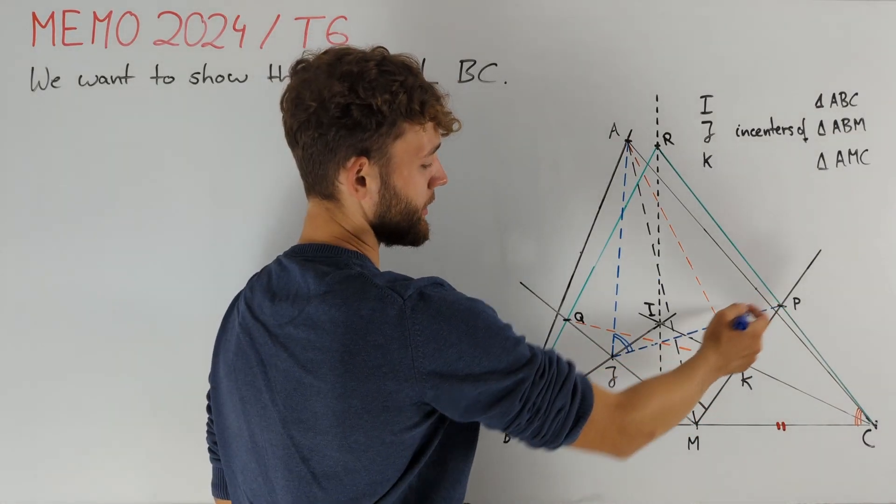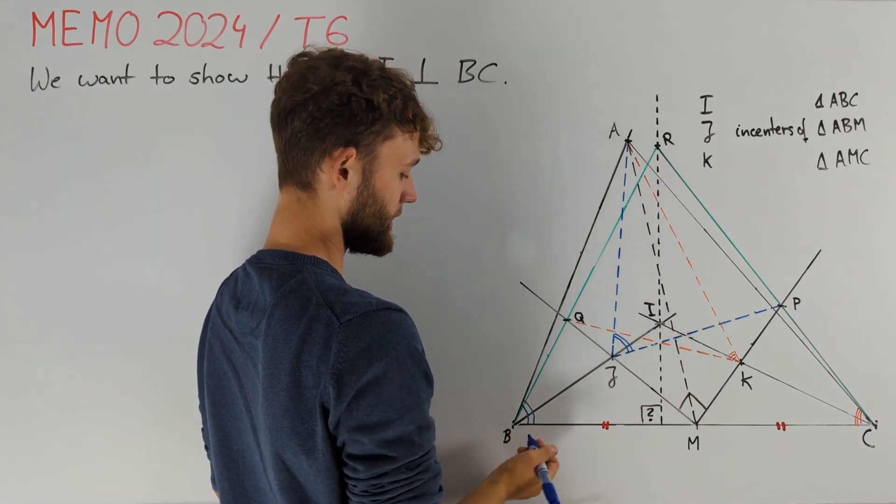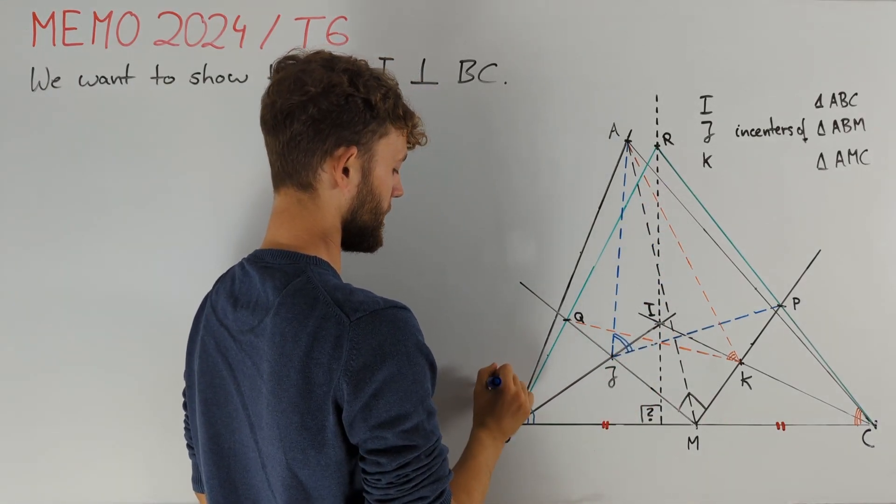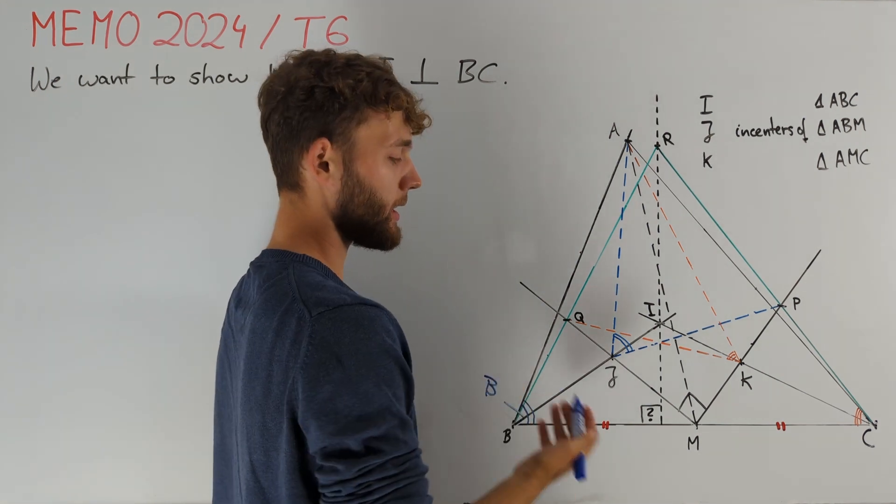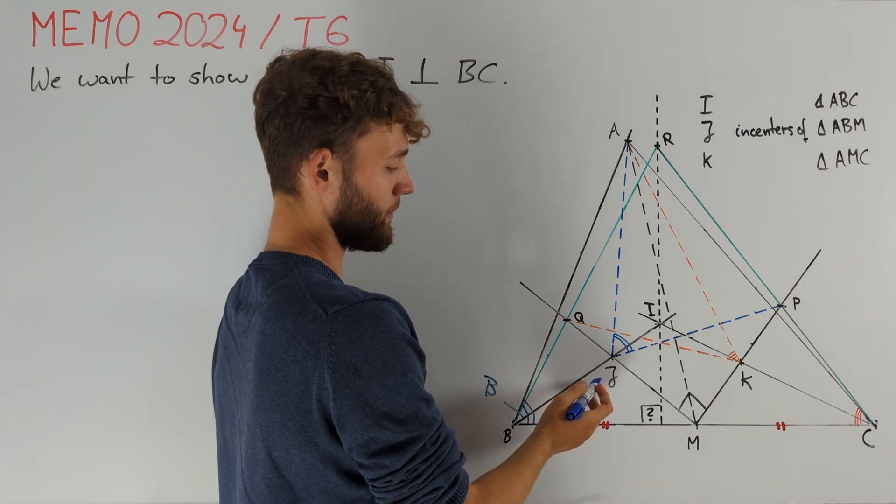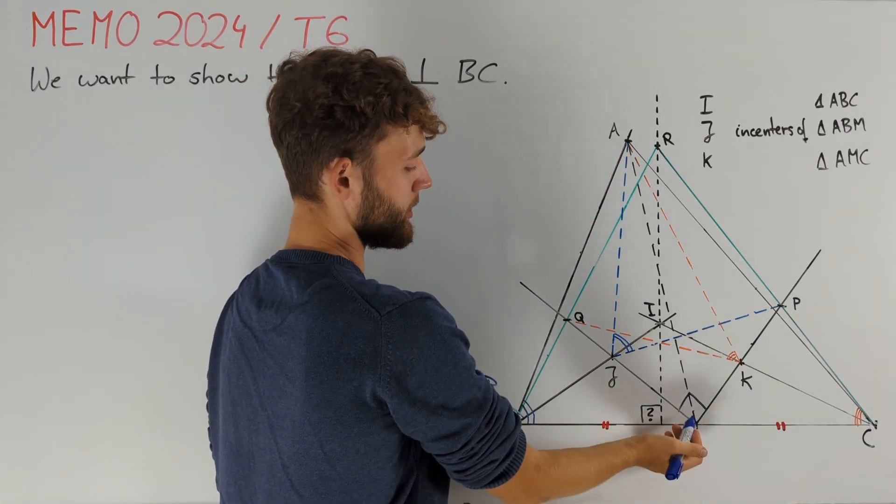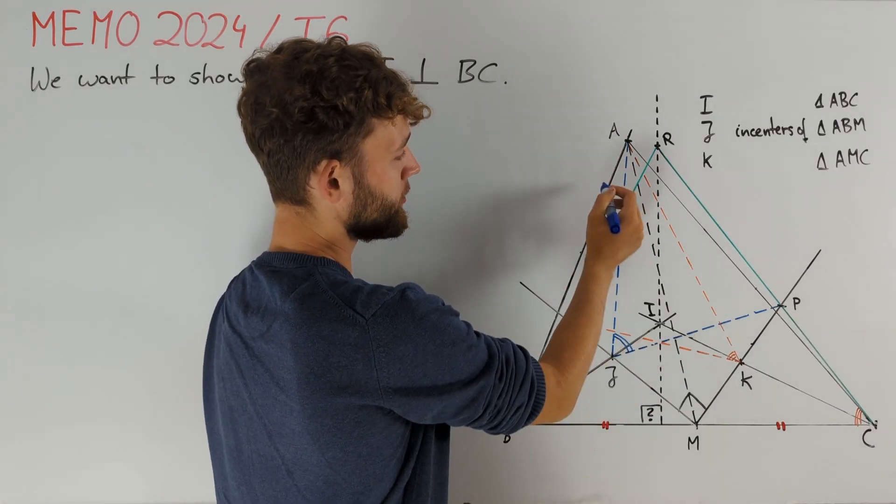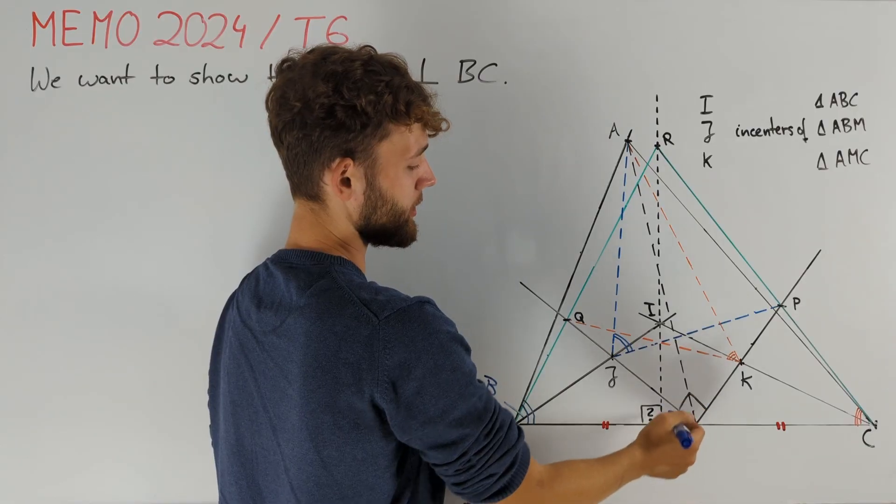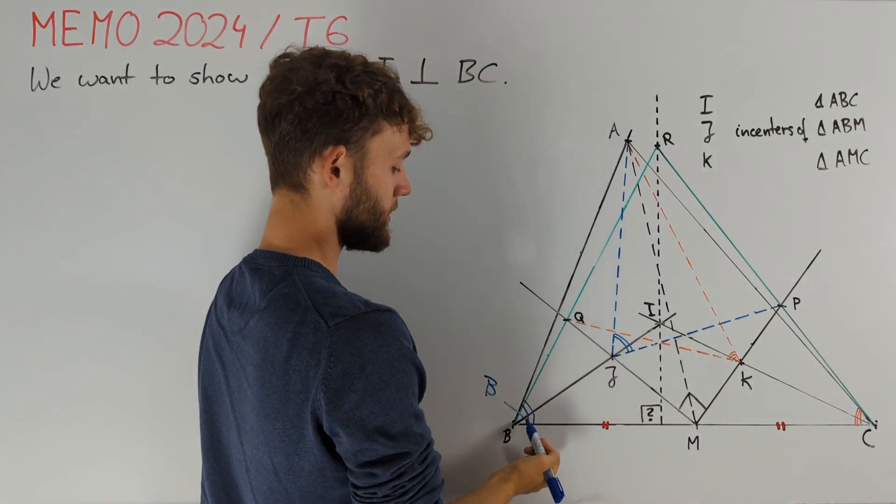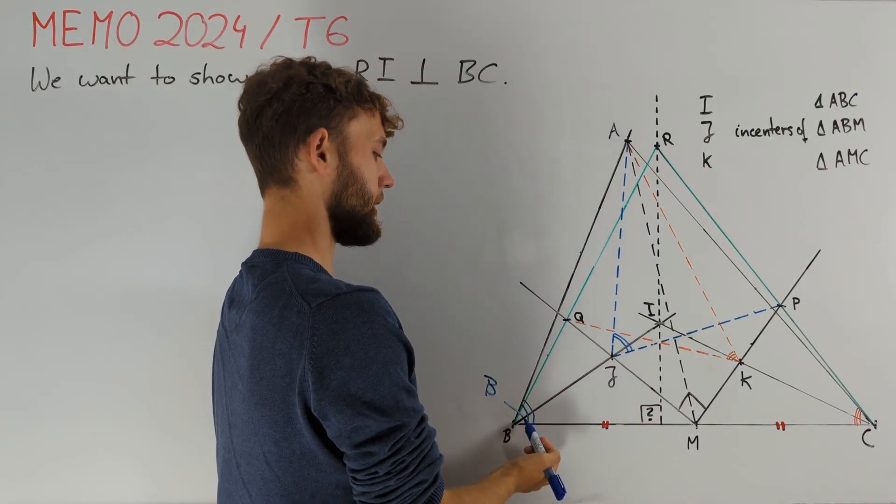Since we already know this angle here, namely it's just angle CBA which I will denote with beta, we would like to find other angles including J. Note that J is the incenter of triangle ABM. This triangle has two really weird angles that we don't understand but the third interior angle is beta which is quite promising.